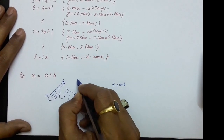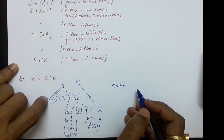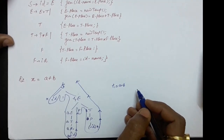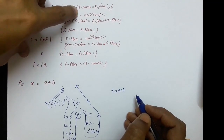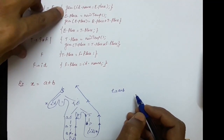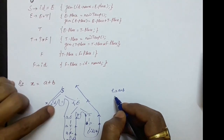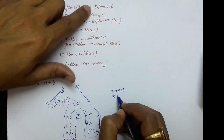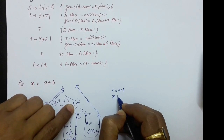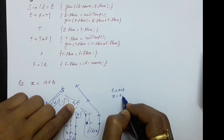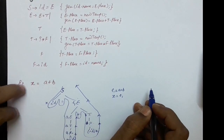Going up there is again a reduction: S produces id equals E. The semantic rule for this is: generate id dot name equals E dot place. So the three address code statement is: id dot name — which is x — equals E dot place — which is t1. So the three address code for x equals a plus b is: t1 equals a plus b, and x equals t1.